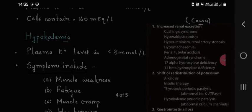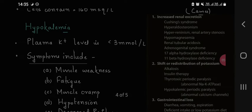Increased renal excretion: Cushing syndrome, hyperaldosteronism, hyperreninism, renal artery stenosis, hypomagnesemia, renal tubular acidosis, adrenogenital syndrome, 17-alpha hydroxylase deficiency, 11-beta hydroxylase deficiency. Shift or redistribution of potassium: alkalosis, insulin therapy, thyrotoxicosis.